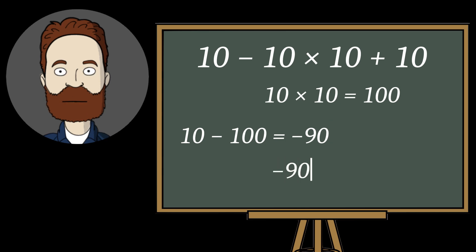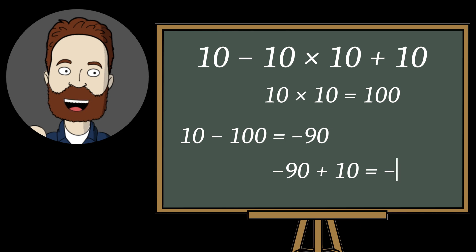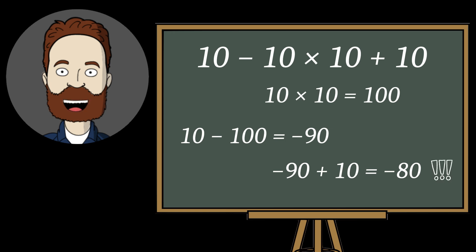Next, minus 90 plus 10 equals minus 80. So in the end, the correct answer is minus 80.